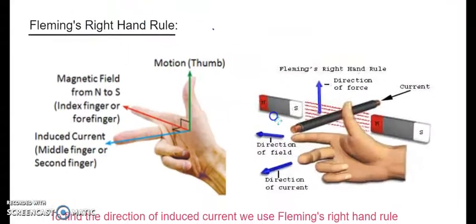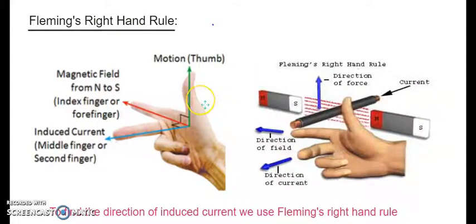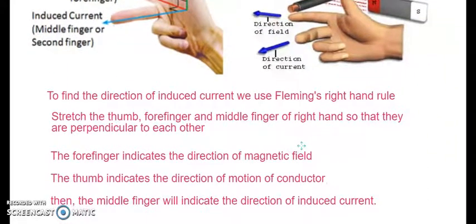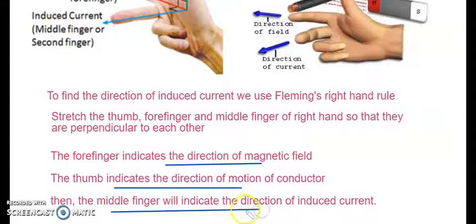The method to find the direction of the induced current is Fleming's right hand rule. The thumb indicates the direction of motion, the forefinger indicates the direction of the magnetic field lines, and the middle finger shows the direction of the induced current. Stretch the thumb, forefinger, and middle finger of the right hand so that they are mutually perpendicular to each other. The forefinger indicates the direction of the magnetic field, the thumb the direction of motion, and the middle finger the direction of the induced current.